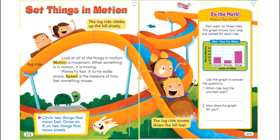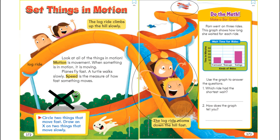There is a question here — circle two things that move fast. I can circle the log ride when it's going down the hill, and also the plane. Put an X on two things that move slowly — like the turtle, or the log ride when it's climbing up the hill.